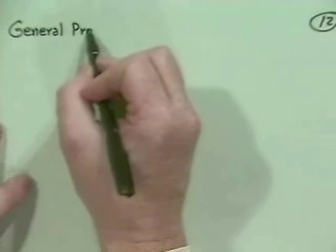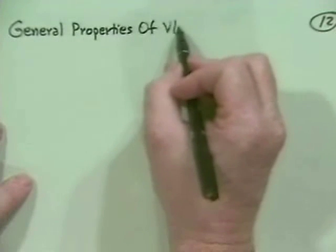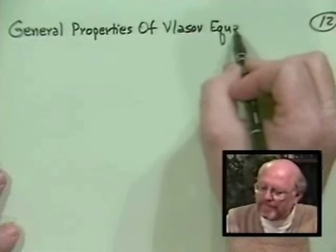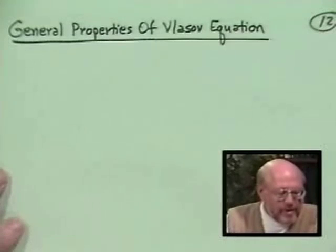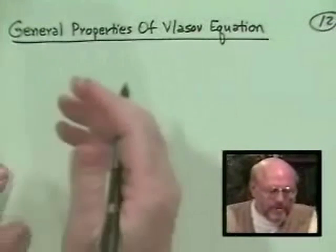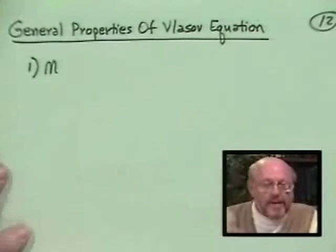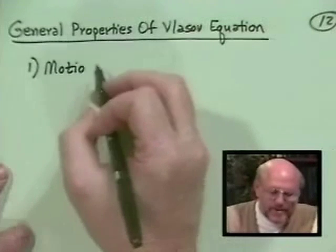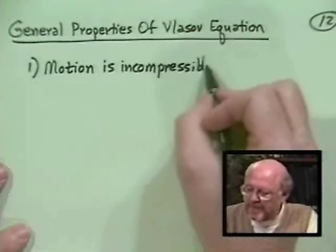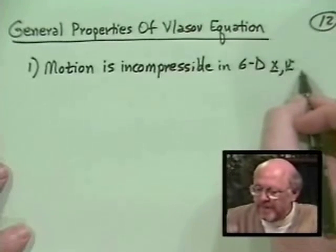Okay, what we're going to do now is talk a little bit about some general properties of the Vlasov equation. This is before we launch into some linearized solutions. The idea is that we would like to get some feeling for what kinds of motions and effects we might get out of the Vlasov equation. The first is that motion is incompressible in 6D x,v phase space.